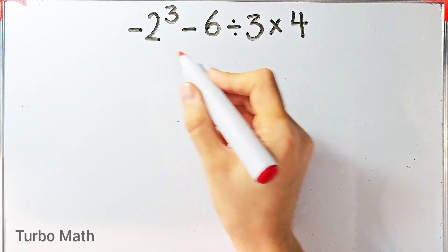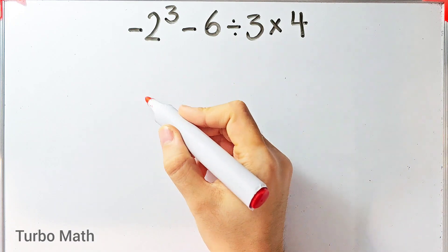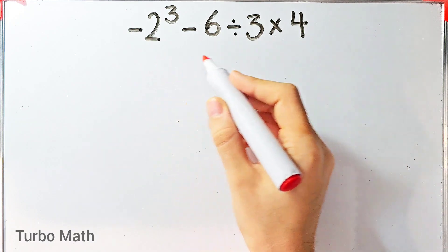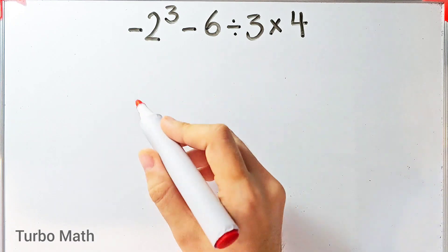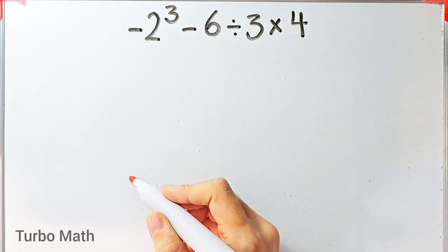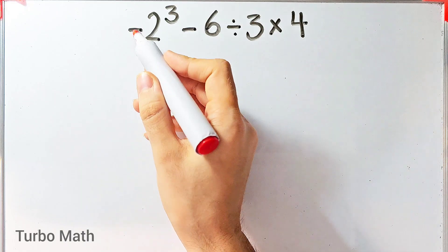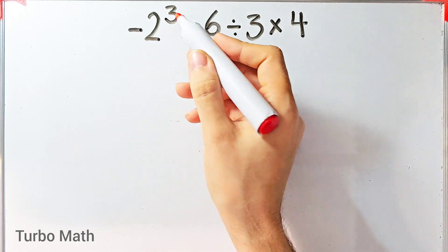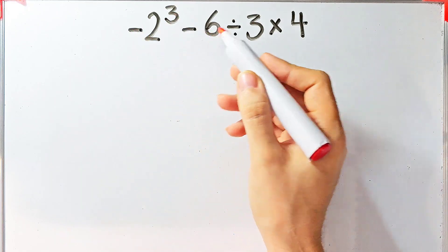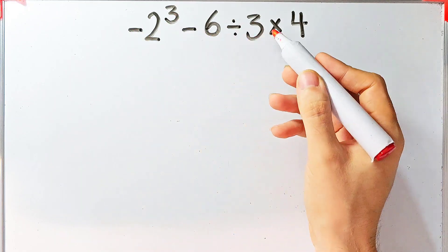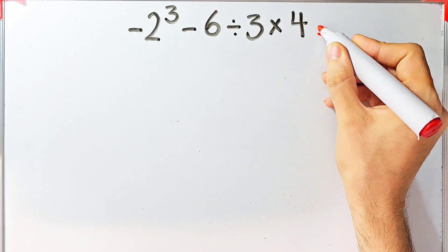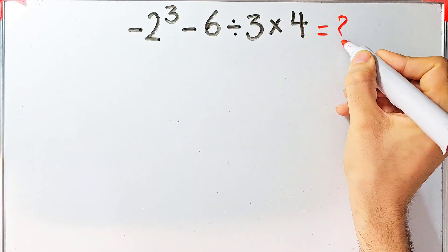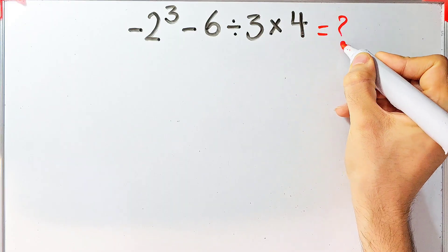Hi friends, welcome to Turbo Math channel. Many people when they see this question don't know which operation to do first, so they might get it wrong. The question is: negative two to the power of three, minus six divided by three, then times four. What is the answer? Can you solve it?